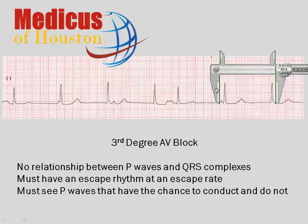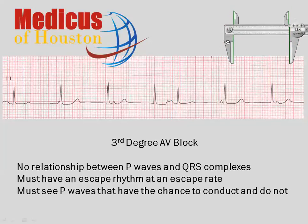We have to measure two rates here. When anyone hands you a 12-lead ECG or a rhythm strip and asks you what the rate is, that's a trick question. There's always two rates, not just one. You always have an atrial rate and a ventricular rate when you're analyzing a 12-lead ECG or especially a rhythm strip.